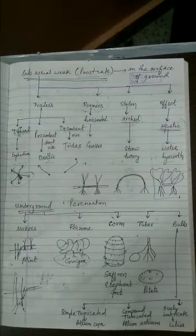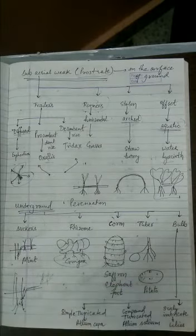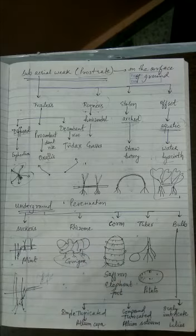The second type of underground stem or modification of stem possible is rhizome. Rhizome is found in ginger, turmeric, and banana.